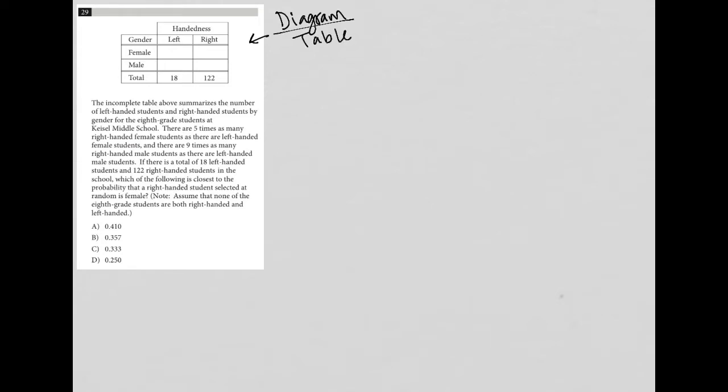We see the table here. This table has something to do with handedness. We're separating things by female and male. We're given some total numbers, but no other data within the table itself. The question says the incomplete table above summarizes the number of left handed students and right handed students by gender for the eighth grade students at Keisel Middle School.